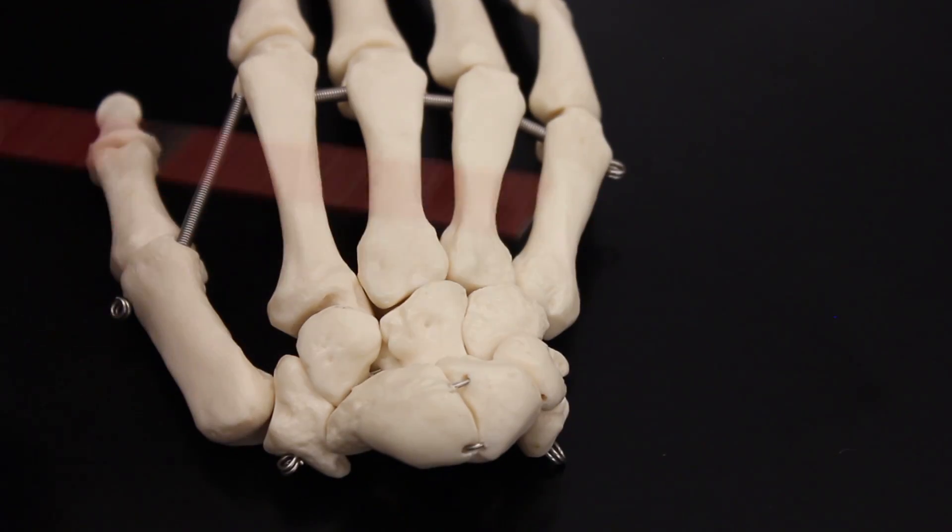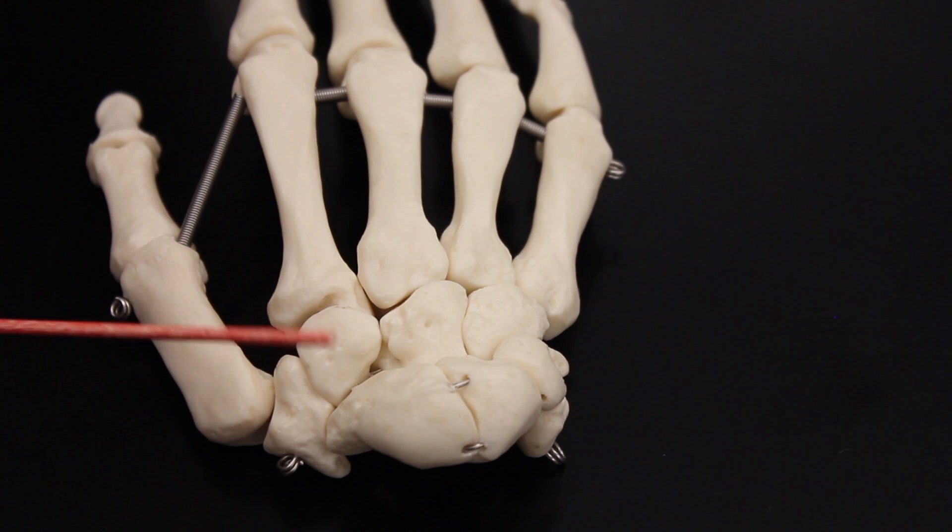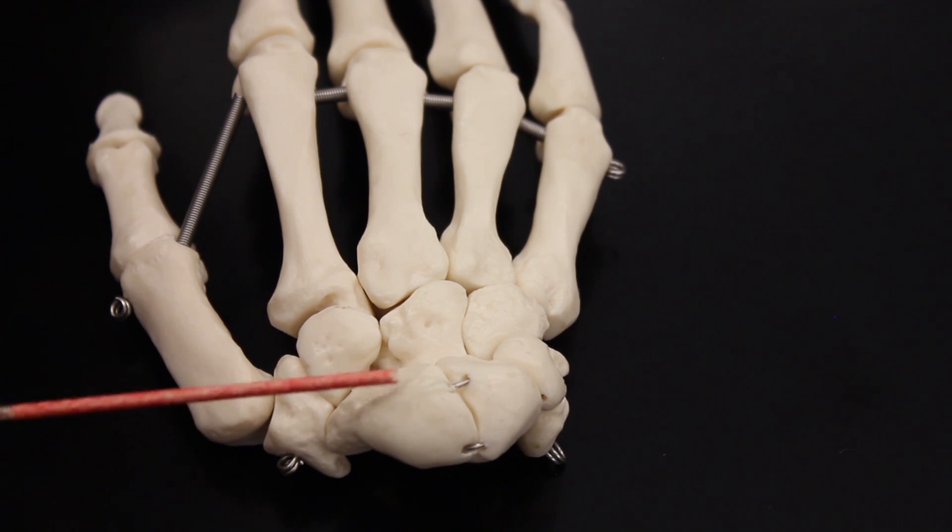All right, so now we're taking a look at the dorsal view, or the dorsum of the hand. We're going to take a look at the carpal bones here. If we look at the carpal bones, we're going to start right here. This is scaphoid.